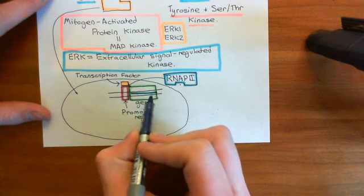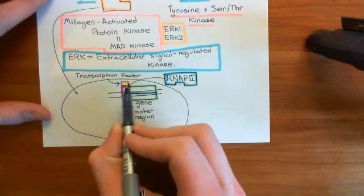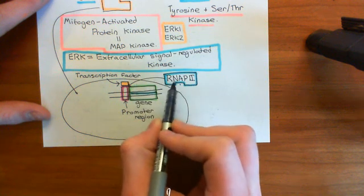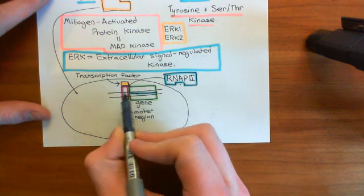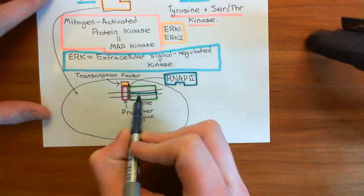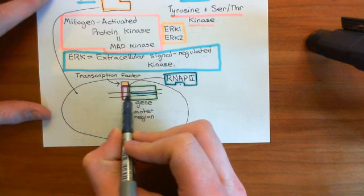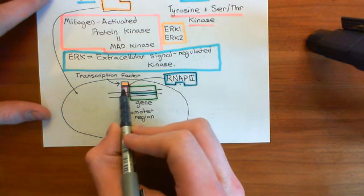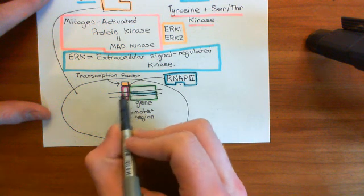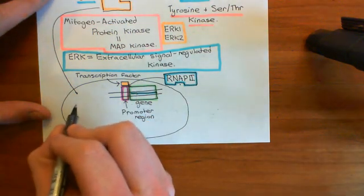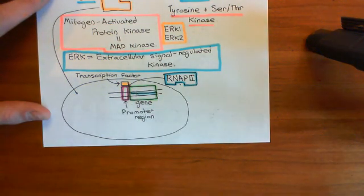At promoter regions where the transcription factor enhances affinity, it will increase the expression of the downstream gene. Whereas at other promoter regions it binds to, it will decrease the affinity for RNA polymerase 2, resulting in less mRNA and decreased expression. So transcription factors change gene expression within the cell — increasing the expression of some genes and decreasing others. And these transcription factors are what we are going to be activating via the ERK enzyme.